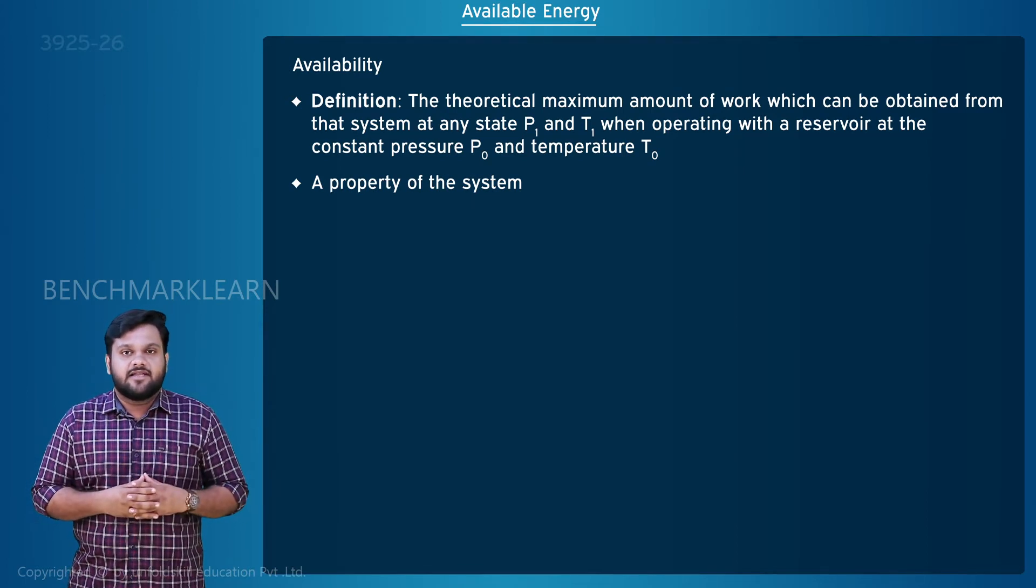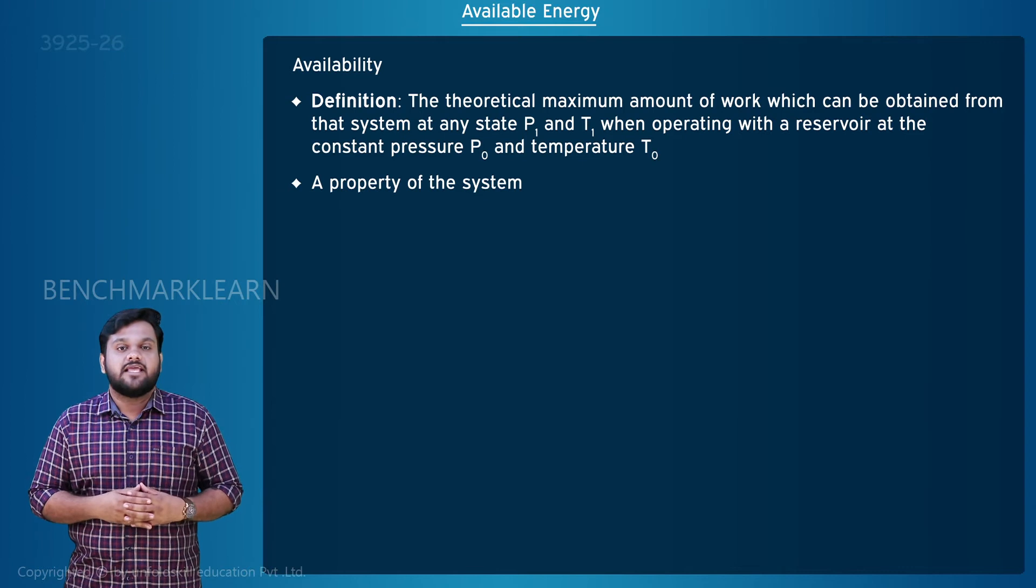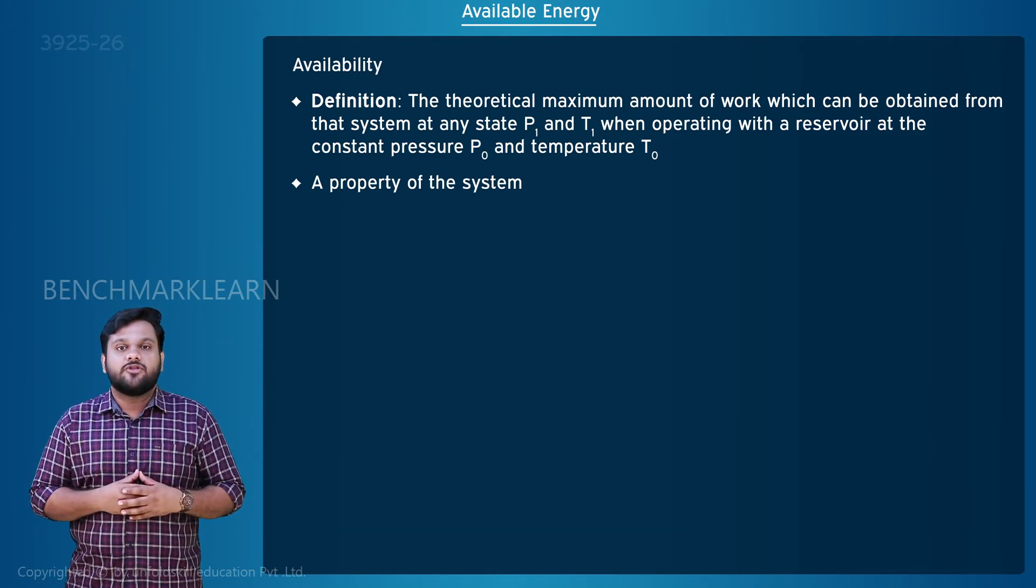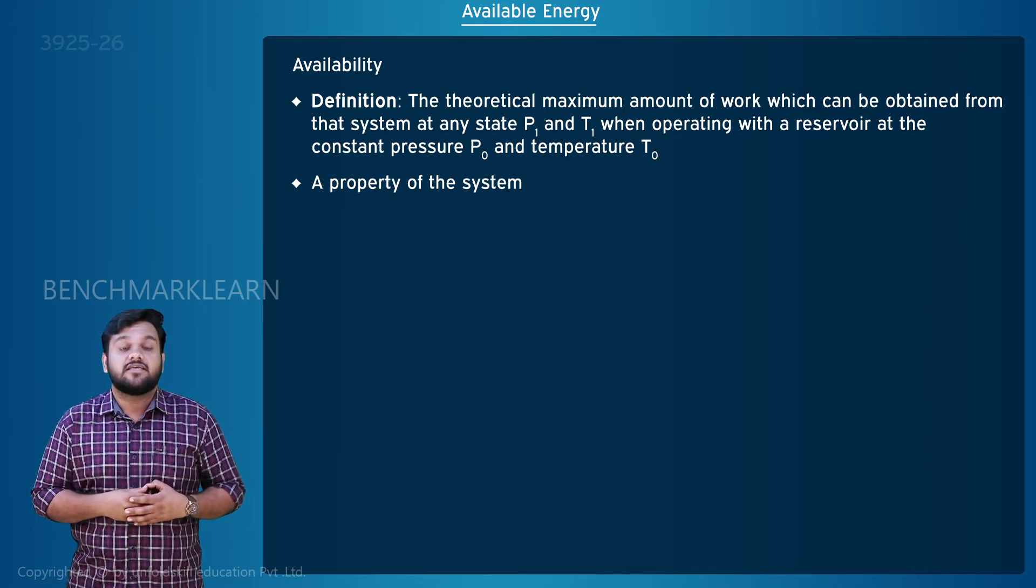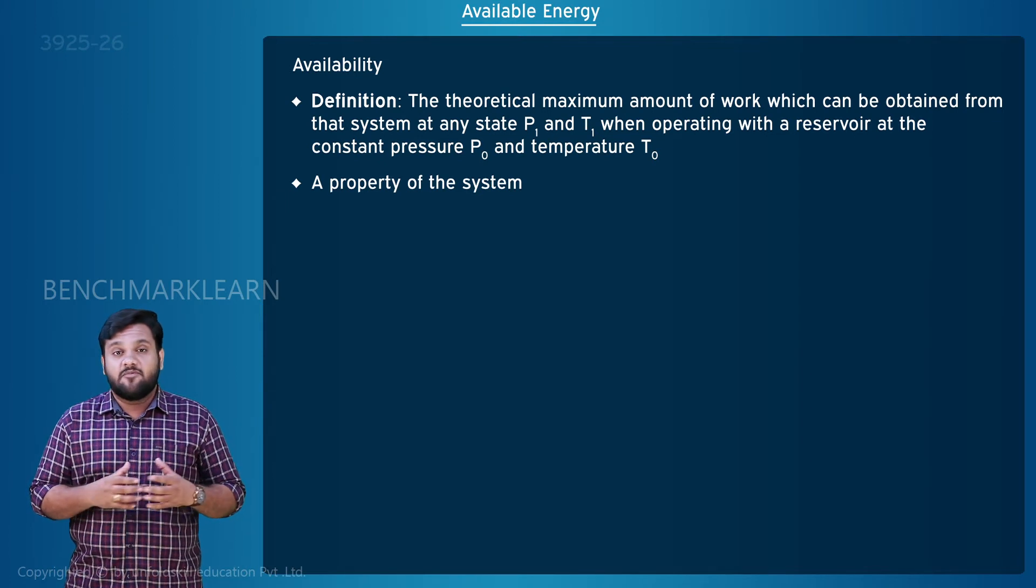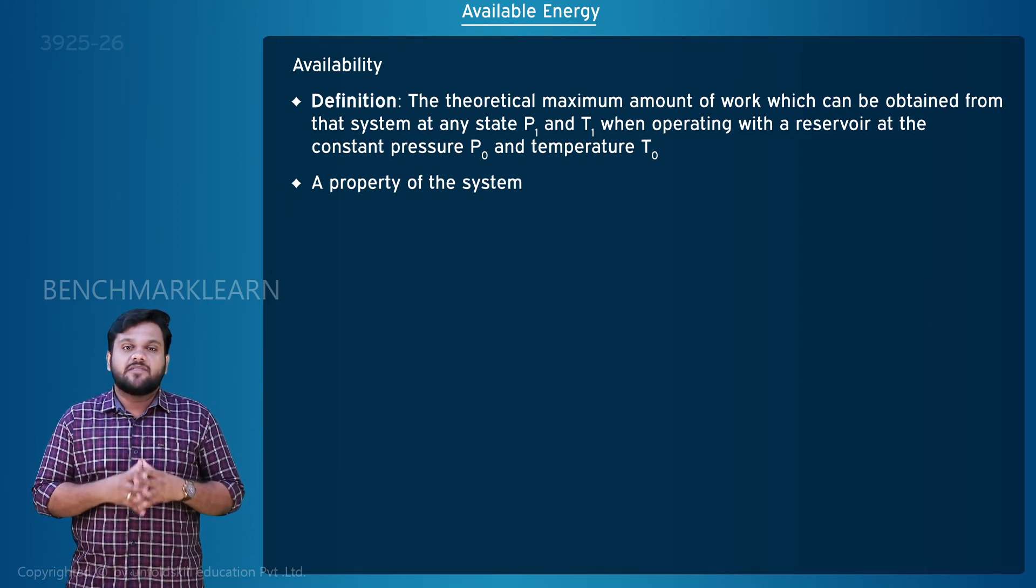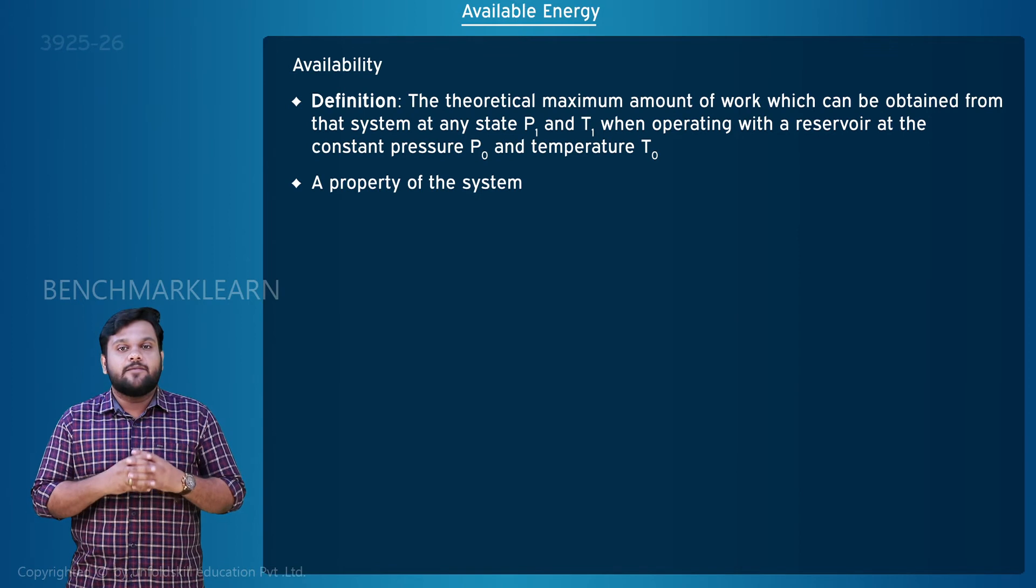For a cyclic heat engine, a part of the heat energy supplied is converted into useful work and rest is rejected. The maximum work output obtained from the heat supplied is the available energy.